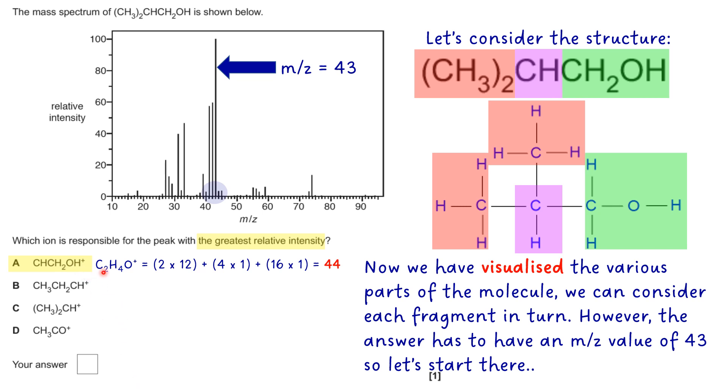So the two carbons are going to be 2 times 12, the four hydrogens are going to be 4 times 1, and the one oxygen is going to be 16 times 1, which allows me to work out 44 as the m/z value.